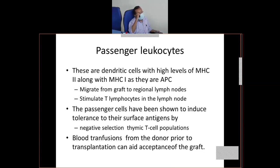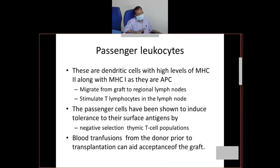Passenger leukocytes are important in the sense that before doing the graft from individual A to B, if you give blood transfusion repeatedly from individual A to B, it will produce some amount of tolerance because of the same effect as these passenger leukocytes. These passenger leukocytes are basically dendritic cells from the grafted portion — from the donor portion. They will migrate to lymph nodes and thymus, generating immune tolerance in the recipient. You can do this by repeatedly doing blood transfusions before doing the graft.